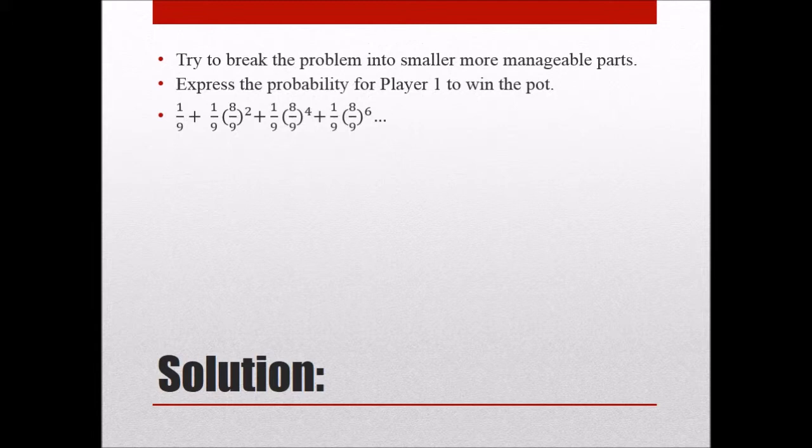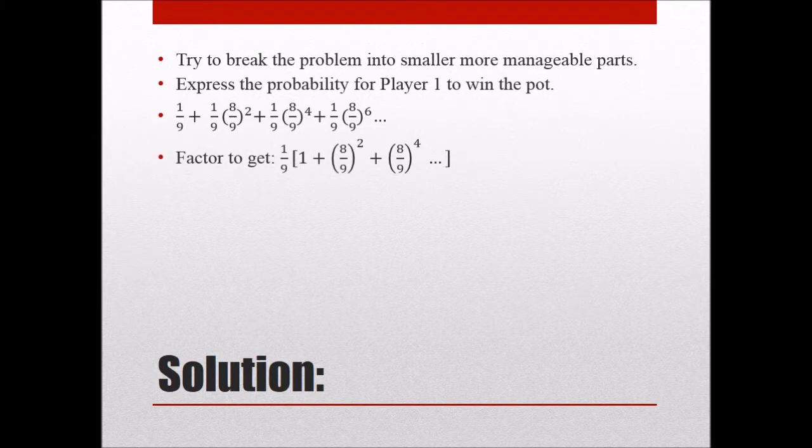And this should look very familiar already, just the type of series that this is. So let's see if we can pull anything out and then our greatest common factor would be the one over nine. So we pull that out and what we're left with is one plus eight over nine squared and then eight over nine to the fourth power. So that is definitely a geometric series.